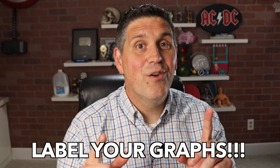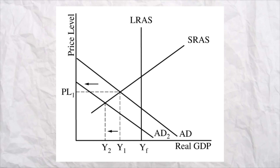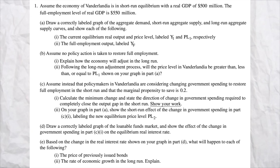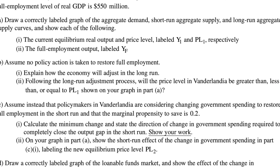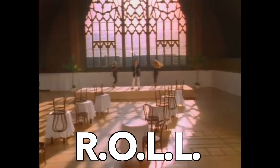The last L stands for label. There's a lot of graphing, so draw big graphs and make sure to label them correctly. The worst thing is to miss the point by not putting the letter S. A lot of times the College Board tells you what to label the graph — P1 or Y1 — so use their labeling. If you want to do well on your free response, make sure to ROLL.